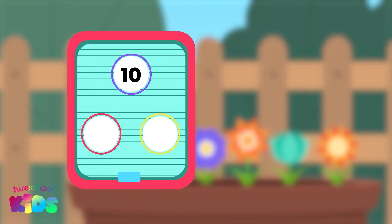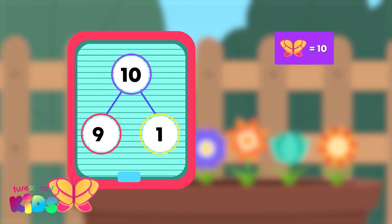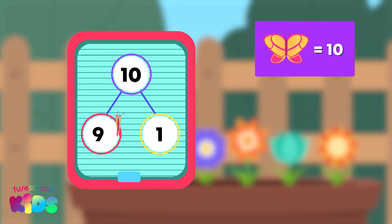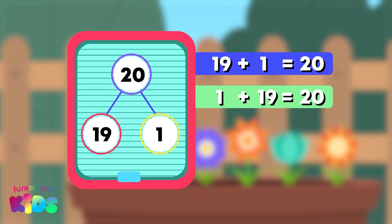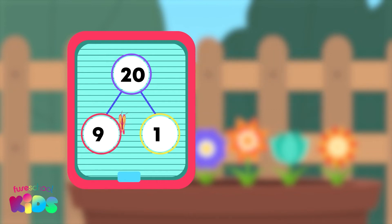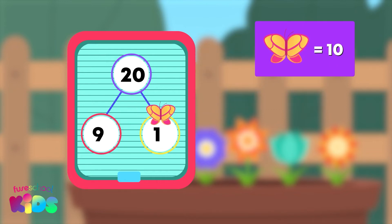The next number bond that adds to 10 is 9 and 1. Here comes a base 10 butterfly to make a bond to 20. What is the number pair now? 19 and 1 is right. 19 plus 1 and 1 plus 19 equals 20. The base 10 butterfly moved.